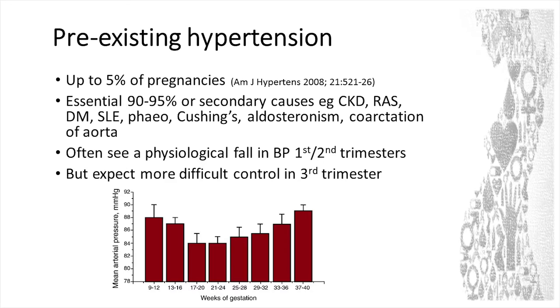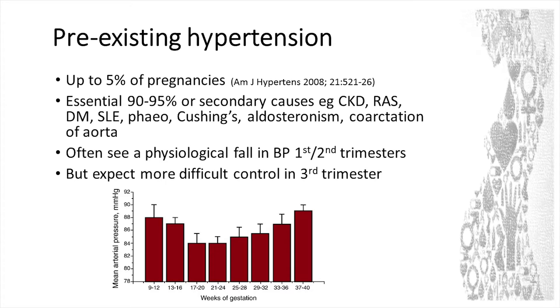Lastly, I was going to address hypertension. About 5% of pregnancies will be complicated by pre-existing hypertension. The vast majority are essential, but there is a small proportion with secondary causes. It's something to think about if you've got someone very young diagnosed with hypertension in the absence of a very strong family history. There is a physiological fall in blood pressure in the first and second trimester, so you may find you need to reduce medication at that time, but it tends to come back up late second and third trimester — and in women with pre-existing hypertension, that's often when we start running into trouble.